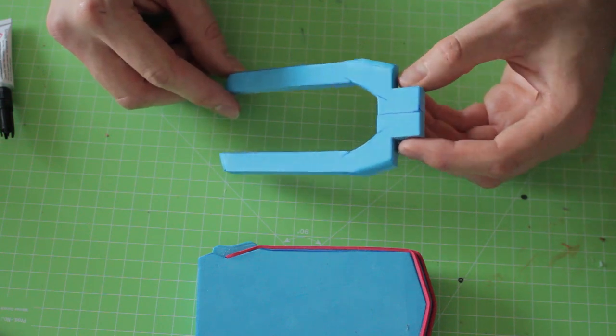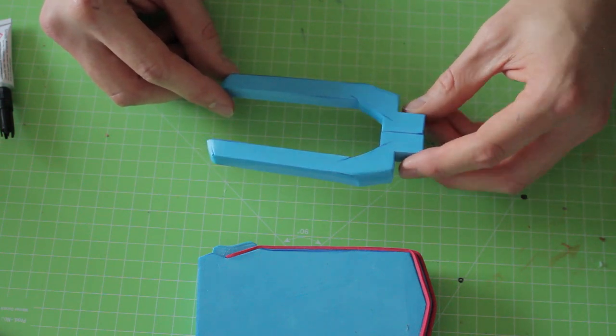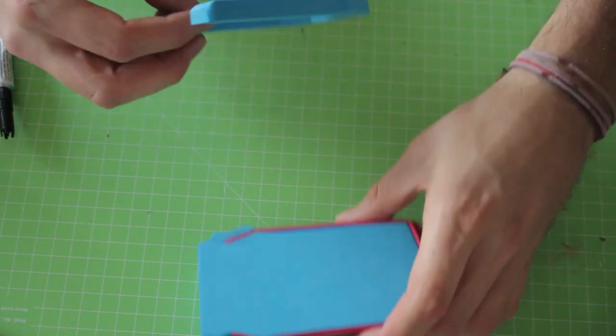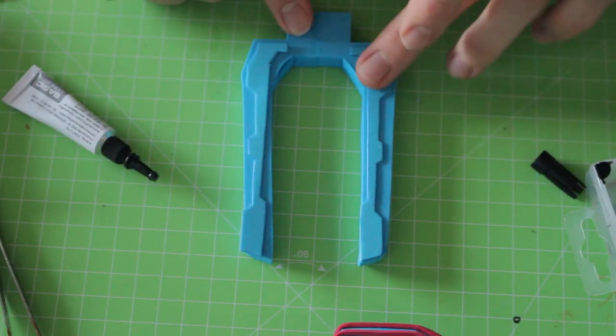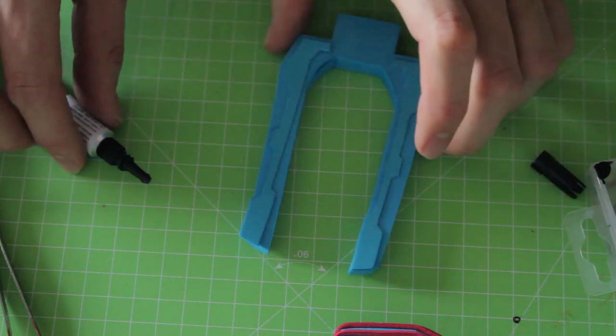I cut this shape out of 1cm craft foam as well and for the details I decided to use 1mm craft foam. 2mm craft foam would be too thick I believe and the morpher would stay open and we don't want that.